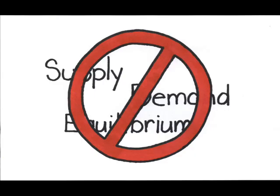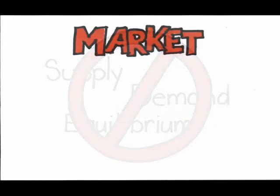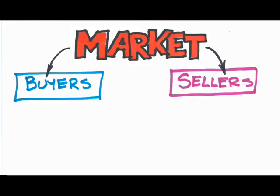Okay, in plain English, what two things do we have to have in order to have a market? Well, you're going to have to have buyers and sellers.